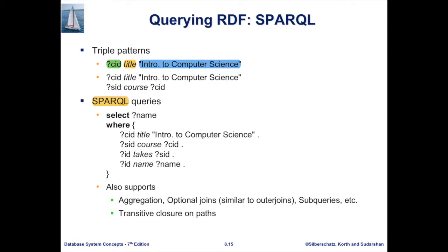Just as we have SQL for relational databases, for RDF we have what we call SPARQL. For SPARQL, we have a triple pattern — a variable with a question mark, a predicate, and some value. SPARQL queries also have SELECT and WHERE clauses, but the conditions are triples. The question mark is the syntax for SPARQL variables. It also supports operations like aggregation and joins, but the underlying operations are reachability in a graph — pathfinding and getting transitive closures — because it is essentially a graph database.